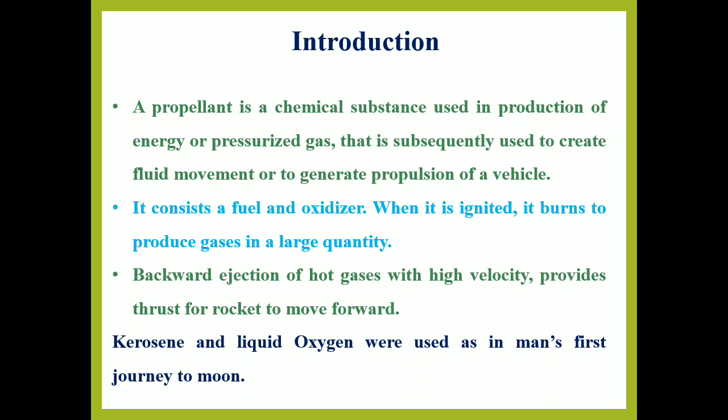These are the chemical substances which are used to produce energy or pressurized gas, which are further used to create fluid movement and generate the propulsion of a vehicle. They usually consist of fuel and oxidizers. Once they ignite, they burn to produce gases in large quantity. These gases then come out through the nozzle of the rocket motors, so the backward ejection of hot gases with high velocity will provide a thrust for rockets to move forward.